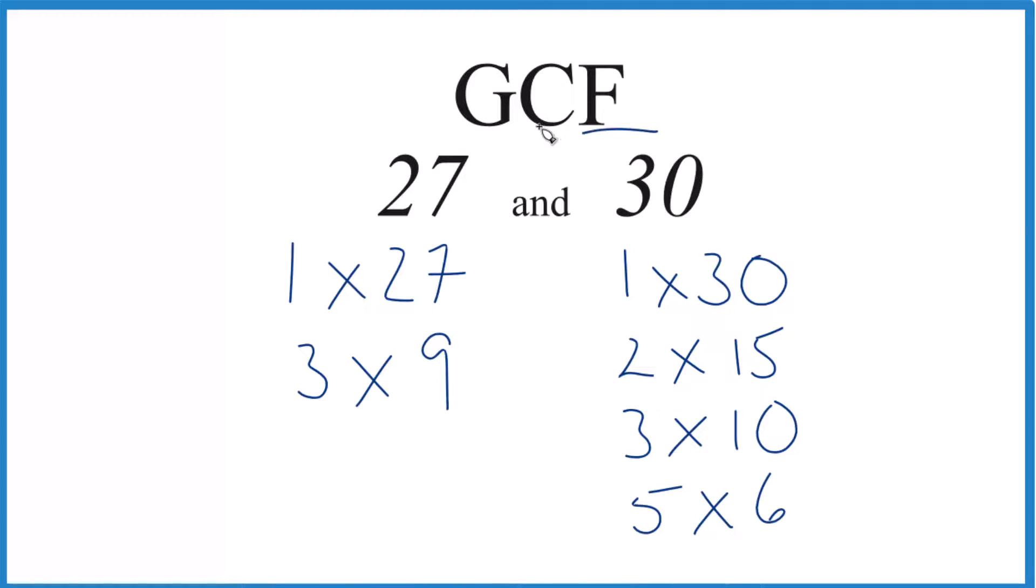So we have our factors. See what's in common. One goes into 27 and 30 evenly. Three also goes into 27 and 30 evenly. Is there anything else? Nope, that's it. So what that means is the greatest common factor for 27 and 30 is going to be 3.